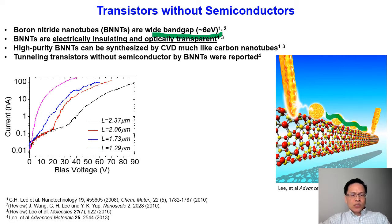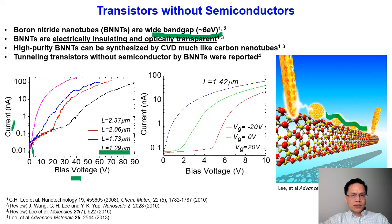As we decrease the channel length, the current flow versus the bias voltage starts to initiate at lower bias voltages at shorter channel lengths, which means the short channel effect that we described earlier in conventional transistors is not present here. We have also demonstrated the gate effect from these devices.